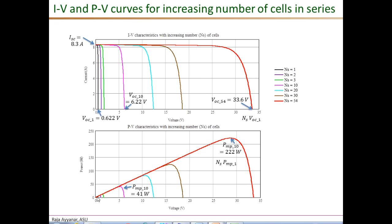Looking at the power curves, for a single cell the power is low; for 10 cells it is roughly 10 times that of a single cell; and for the entire 54-cell module it is about 222 watts — NS times the maximum power of a single PV cell. The P-V curve rises, reaches the peak value of 222 W at the maximum power point voltage, then drops to zero power at the open circuit voltage.